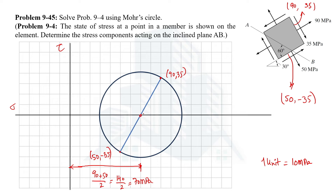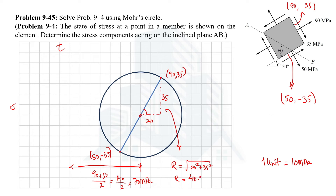To calculate the radius of the Mohr's circle, we use a right-angle triangle. The perpendicular distance is 35 MPa and the horizontal distance is 90 − 70 = 20 MPa. So with perpendicular 35 and base 20, using the Pythagorean theorem, the radius = √(35² + 20²) = 40.31 MPa.